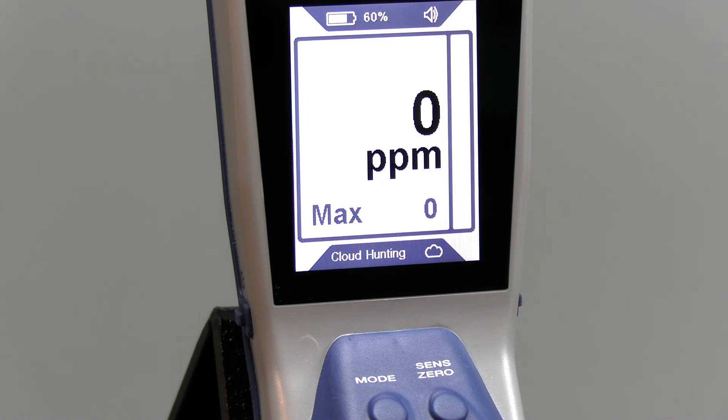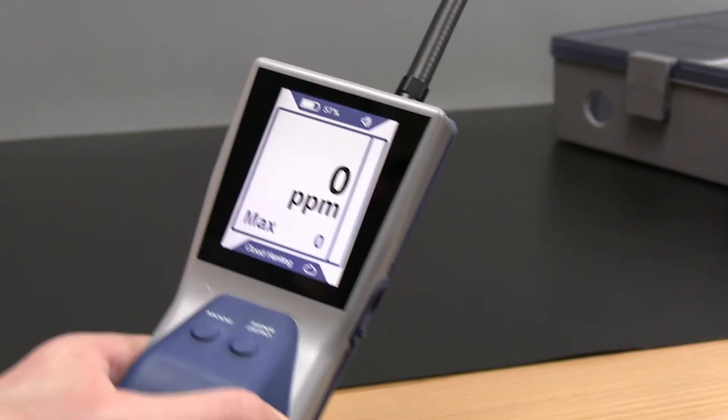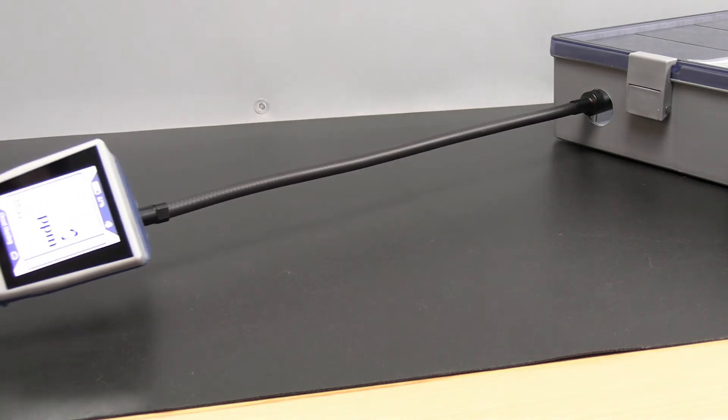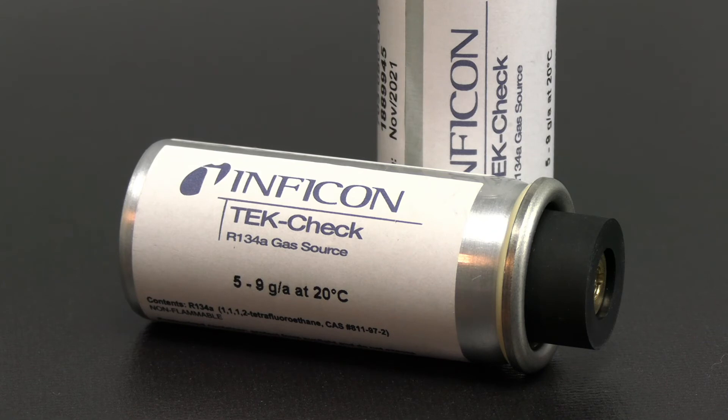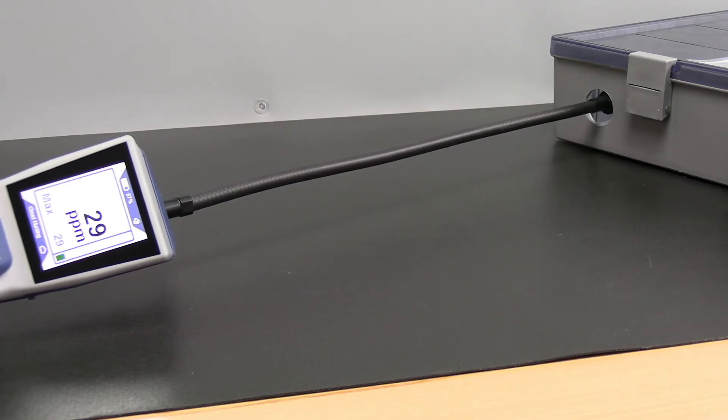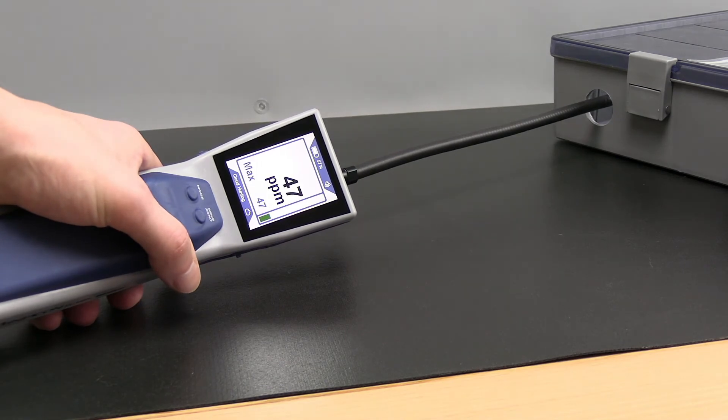Cloud Hunting Mode, exclusive to DTEC Stratus, displays the refrigerant concentration in the air in parts per million. This allows you to read the display and follow the number to find areas of higher concentration, guiding you straight to the source of the leak. The higher the PPM, the closer you are to the leak.